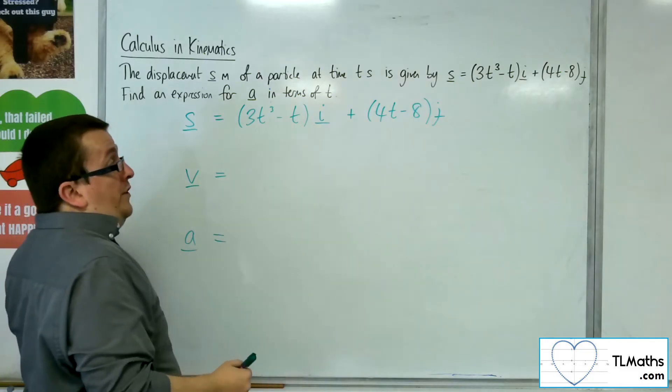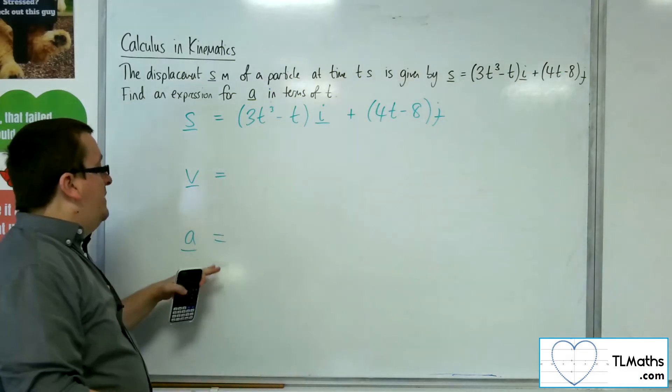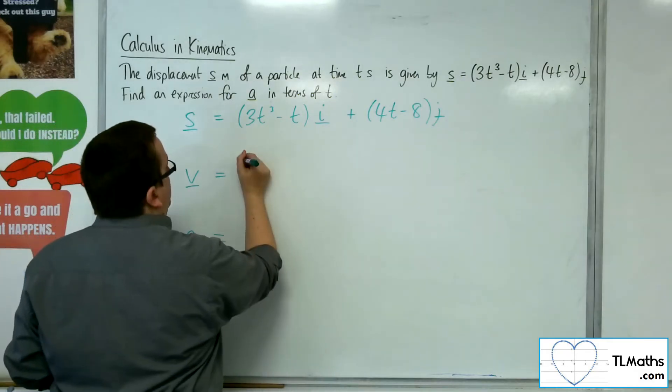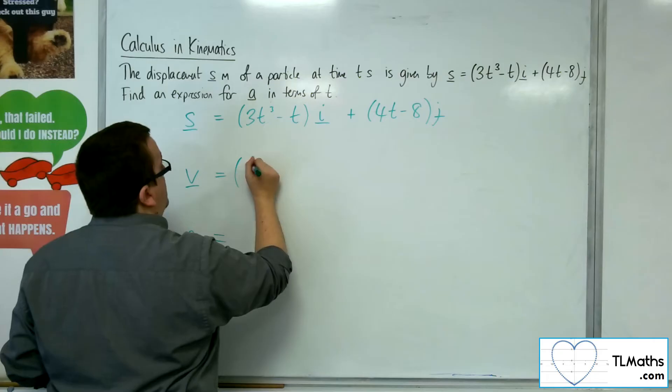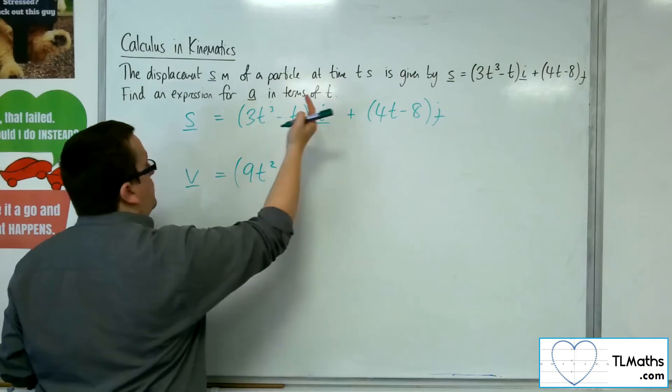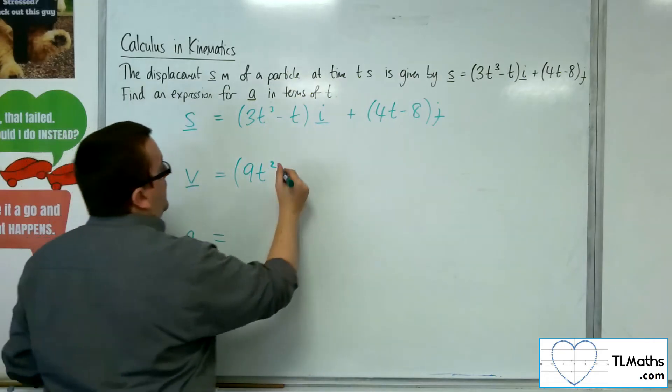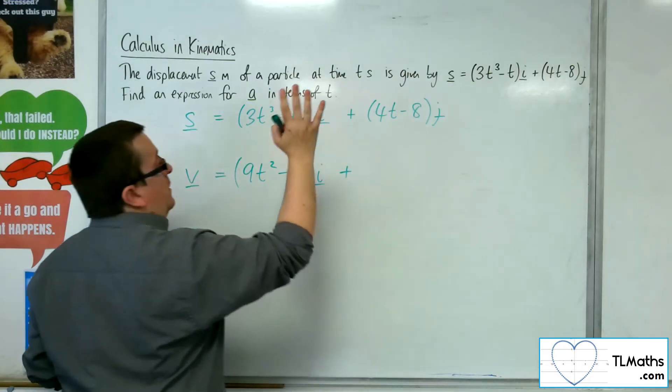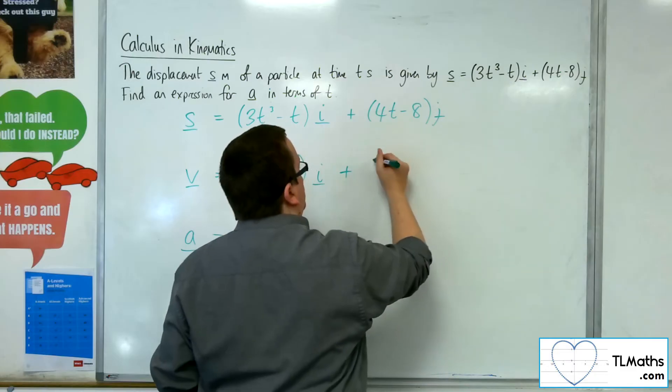So what I want to do is differentiate my way down to get to a. I differentiate the i components. I'm going to get 9t squared - 3 multiplies with a 3, take 1 off the power - take away 1i. And then the 4t minus 8 will differentiate to 4j.